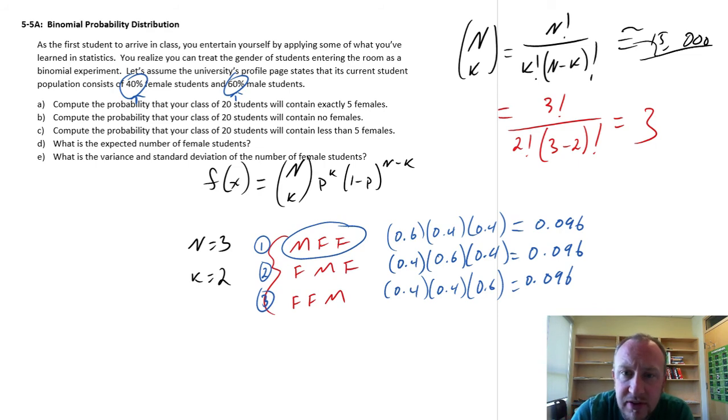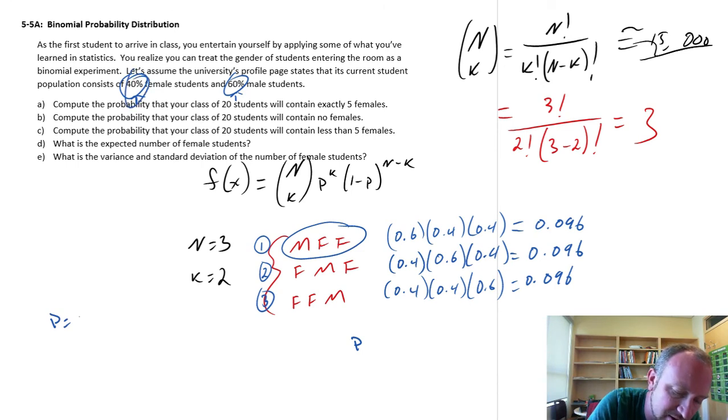So what do we have here? Well, if our probability of a success, let's call that a P. So in this case our probability of success we're looking at the female, so probability of success is 0.4. Probability of failure is 1 minus P, so that's 0.6.